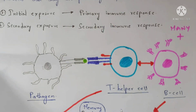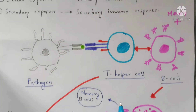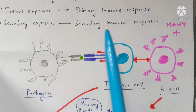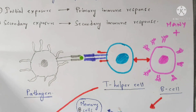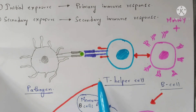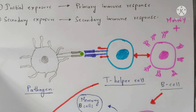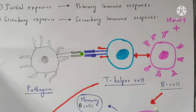Memory B cells are generated from the plasma B cells. Once they are generated, and once the secondary exposure happens — when the same type of pathogen enters the body — the secondary immune response occurs with the help of these memory B cells. These memory B cells play a major and vital role in responding to the secondary exposure, and the duration of this response will be very short because of their presence.